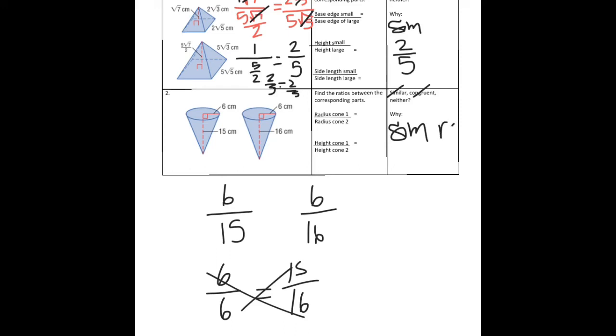Their similarity ratios are not the same. The radius of 6 over 6 is not the same as the height 15 over 16.